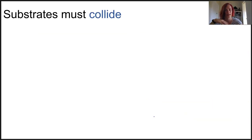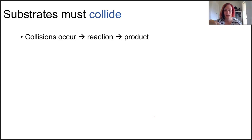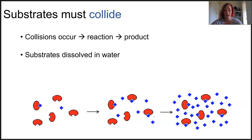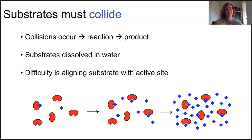We also know that for the enzyme reaction to work, we need substrates colliding with the enzyme for the reaction to occur and produce a product. But that means those collisions actually need to happen. The movement of enzymes and substrate is entirely random, so we can never guarantee the substrate will run into the enzyme. If substrates are in water they have lots of space to move around, and because of that difficulty in aligning the substrate with the active site, it's going to change enzyme activity.